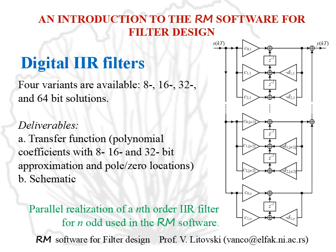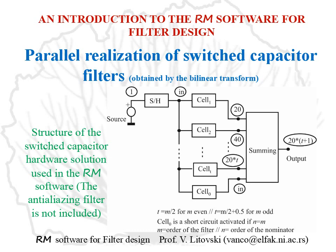The final result is presented in a form of 8, 16, 32, or 64-bit resolution. The program delivers the transfer function, the polynomial coefficients of the digital transfer function with 8, 16, and 32-bit approximation of the pole-zero locations, and a schematic which resembles very much the one depicted on the right-hand side here.